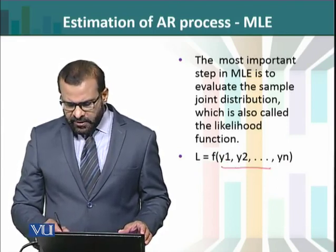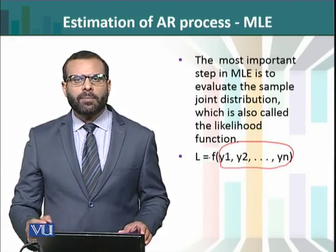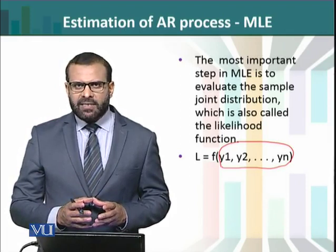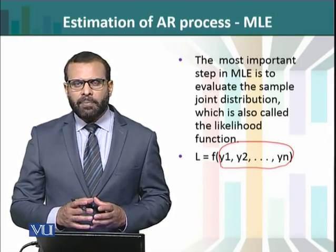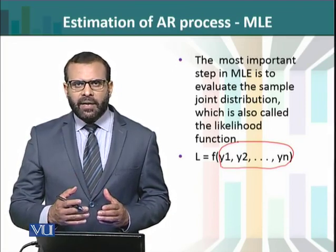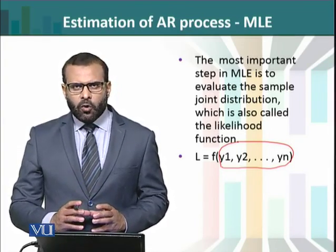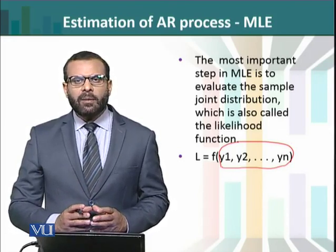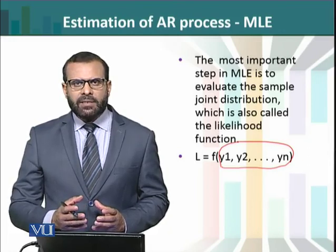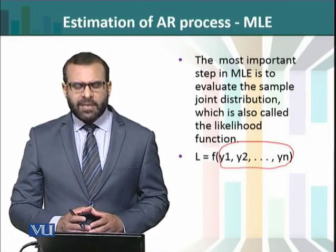To yeh jo sample observations maujud hain, inki ek joint density jo hum banayenge, issko hum likelihood function kehte hain. Is concept ko summarize karein to: hamare paas ek model maujud hai, uske parameters unknown hain, lekin us model ne jo sample data generate kiya hai woh sample observations ka knowledge hamare paas hai. Ab hum yeh karte hain ke jo observations hamare paas maujud hain, unki ek joint density bana lein, aur phir dekhein ke kaun se parameters ke saath iska likelihood sabse zyada hai — woh hamare ML estimates ban jayenge.